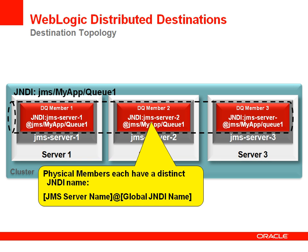Depending on your settings for load balancing and server affinity on your connection factory, the message may be processed on the node where it is received, or it may be sent to another node in the cluster for processing. However, in the case of a uniform distributed topic, messages delivered to a single node in the cluster will be forwarded to all other nodes in the cluster.